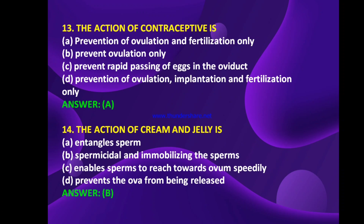The action of cream and jelly is: antagonize sperm, spermicidal or immobilizing the sperms, enables sperms to reach towards ovum speedily, or prevents the ova from being released. The answer is B — the action of cream and jelly is spermicidal and immobilizing the sperms.